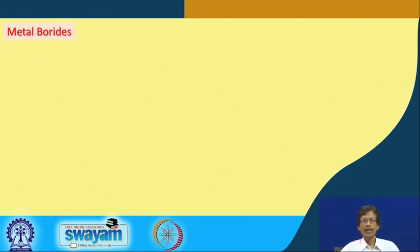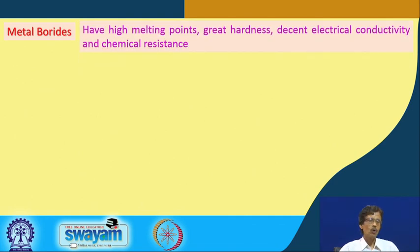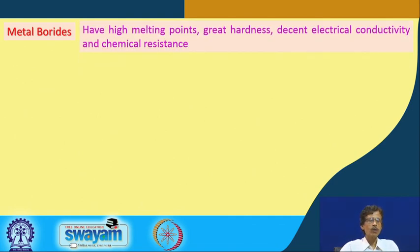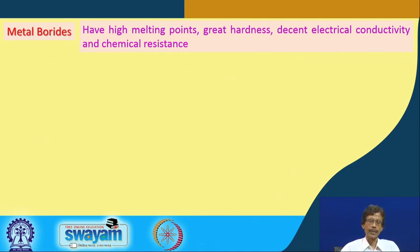Next we consider metal borides. Carbides, borides, and silicides are all metallic hard materials. Borides have very high melting points, great hardness, decent electrical conductivity, and moderate chemical resistance — they are slightly softer than carbides.